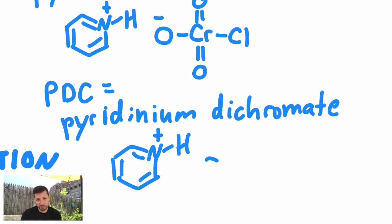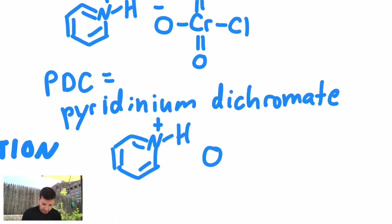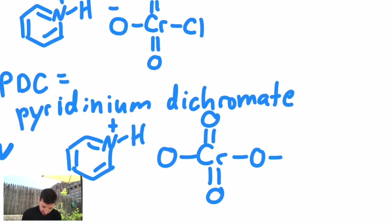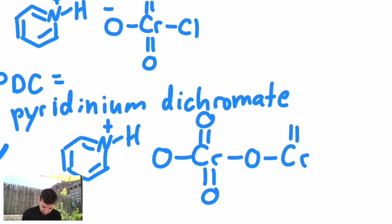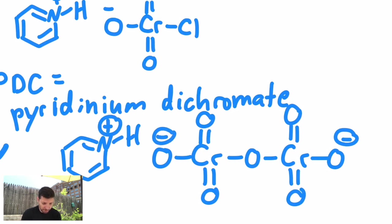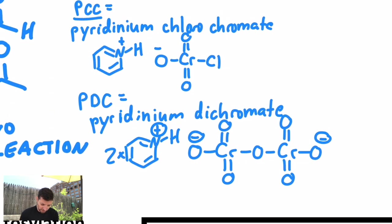Dichromate, if you remember from your general chemistry class is Cr2O7 2-. It looks like this if you are to draw it out. There's your two chromiums, your seven oxygens. So that means I actually need two pyridiniums just to balance the charge, just to show you what those reagents look like.